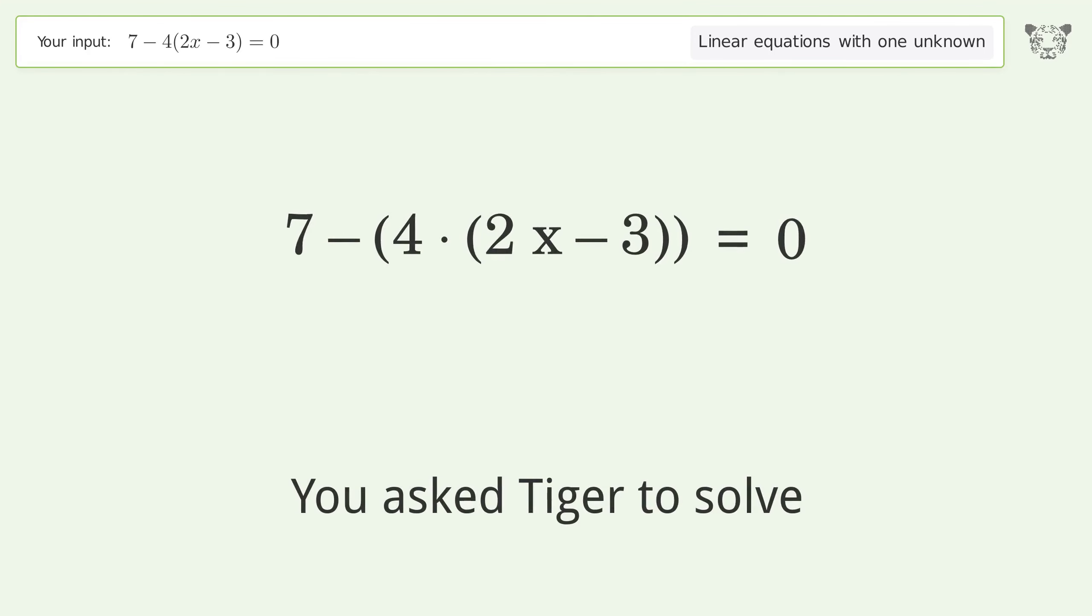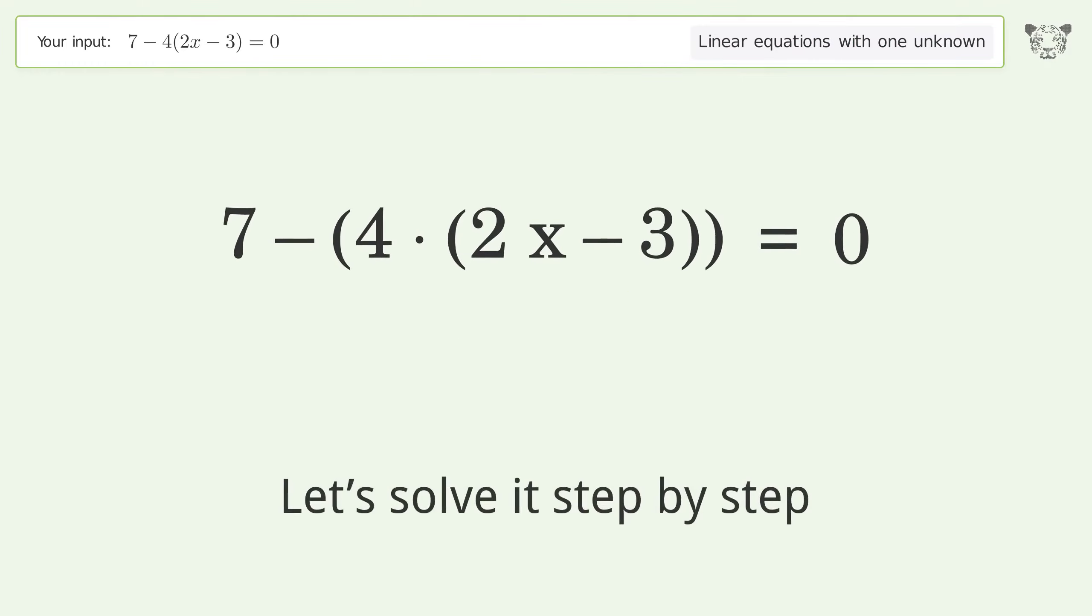You asked to solve this problem dealing with linear equations with one unknown. The final result is x equals 19 over 8. Let's solve it step by step. Simplify the expression, expand the parentheses.